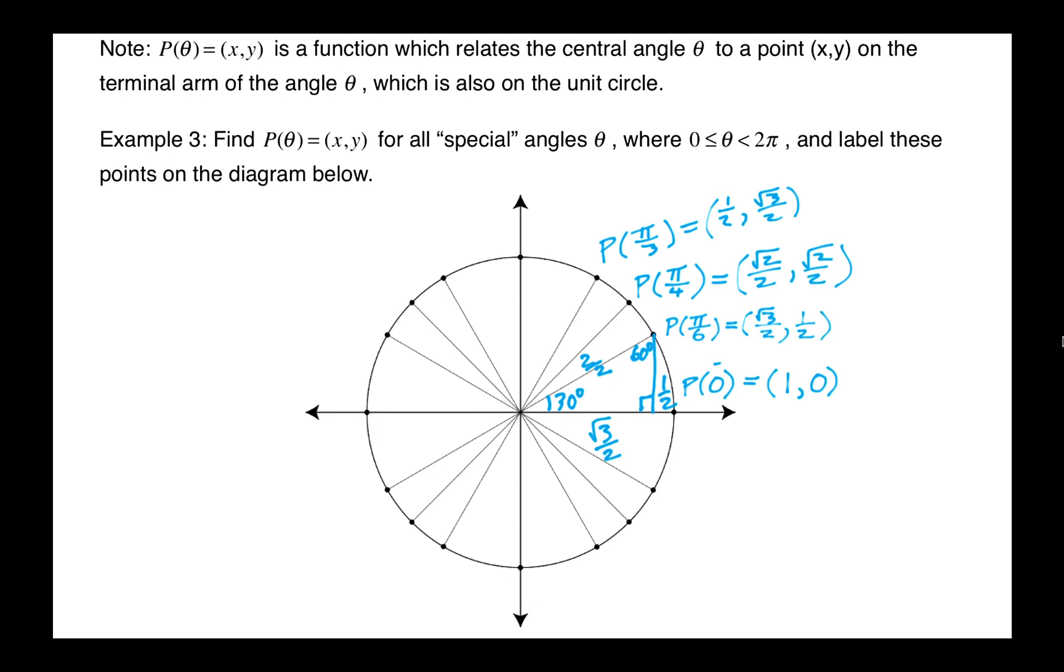I just noticed a bit of a stray mark there, so I'm going to just erase that. Groovy. Now, for 90 degrees, pi over 2, the x and y coordinates are pretty straightforward, (0, 1).